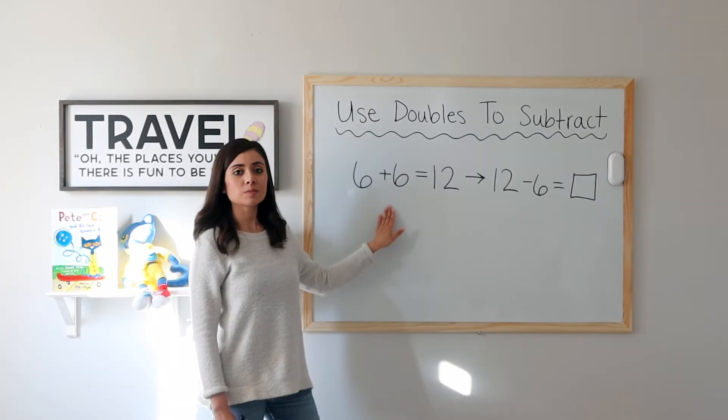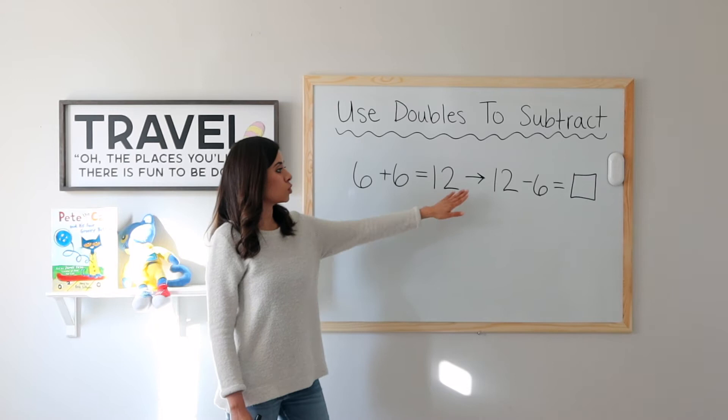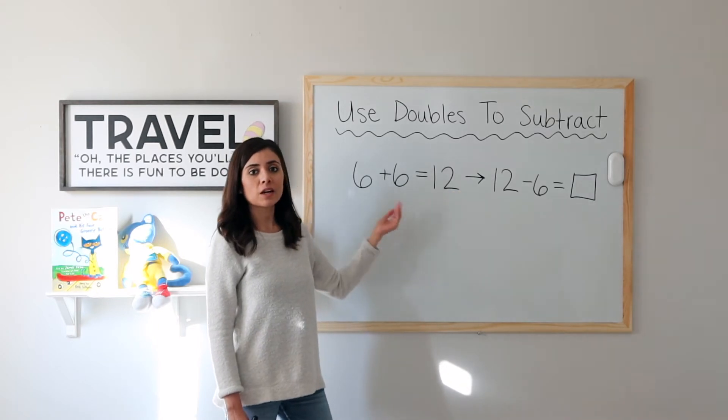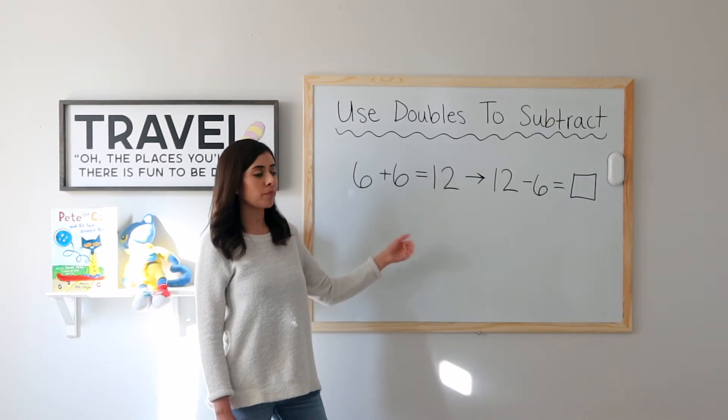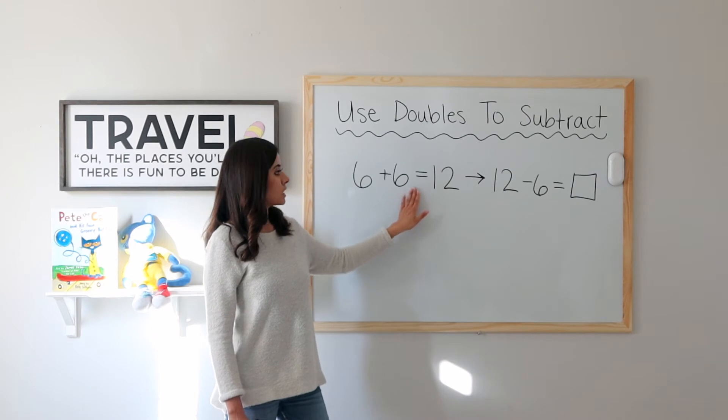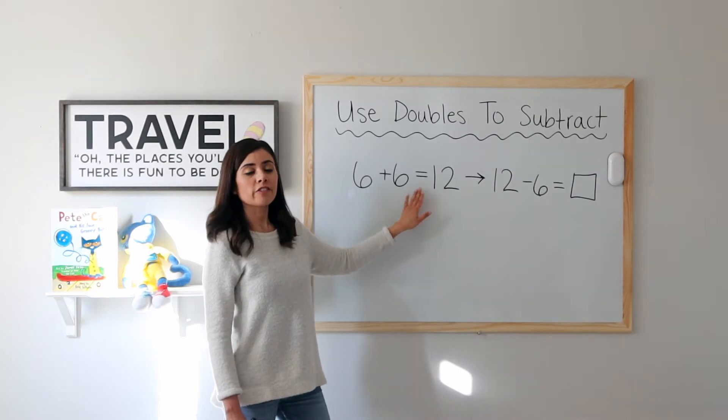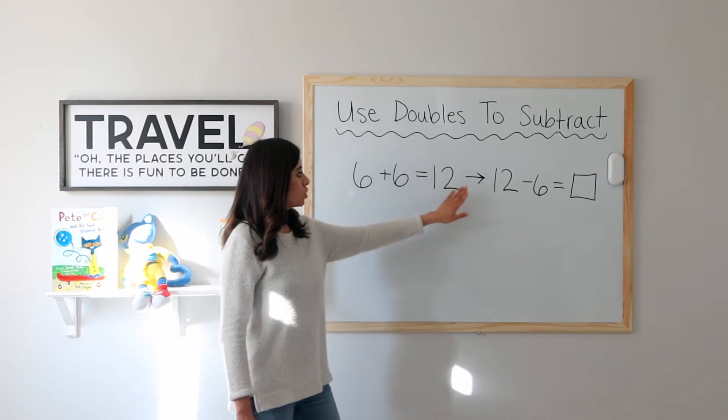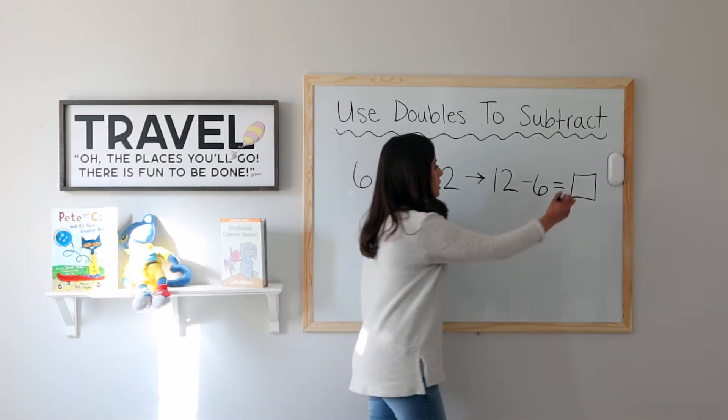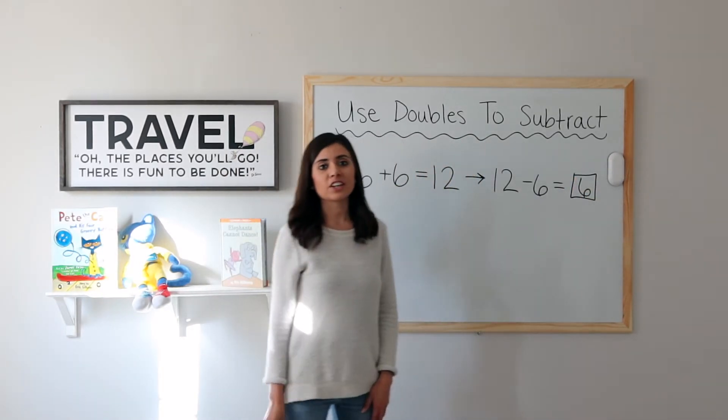6 plus 6 equals 12. I can use this doubles fact to find 12 minus 6 by reading it backwards as a subtraction problem. So 6 plus 6 equals 12, and 12 minus 6 equals 6.